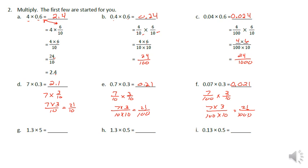On part g, this is where we get unique. Instead of 1.3 — where splitting it apart with models was difficult — if we call it 13 tenths times 5, that's 13 times 5 over 10, which equals 65 tenths. The 5 is in the tenths place, so the answer is 6.5.